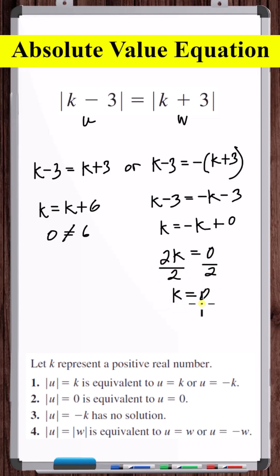K equals zero is a potential solution, but with absolute value equations, you always want to check your solutions because they could be extraneous. K equals zero is the only solution to this equation.